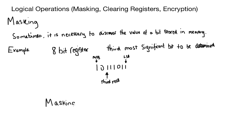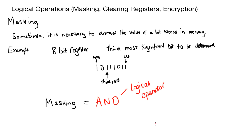In order to get a mark you need to write down that masking uses the AND logical operator. Just by being able to prove that masking uses AND, you'll get a mark.